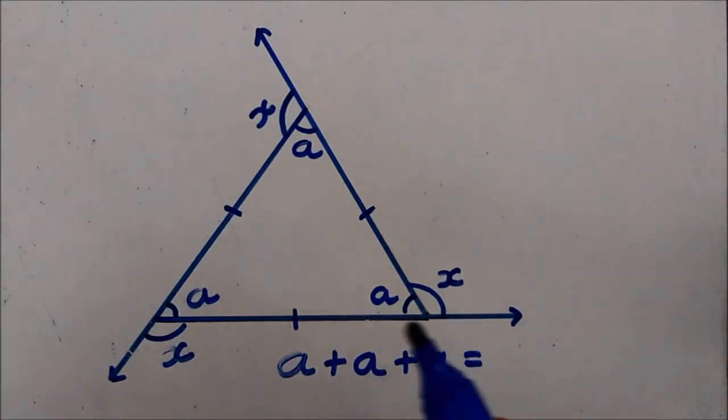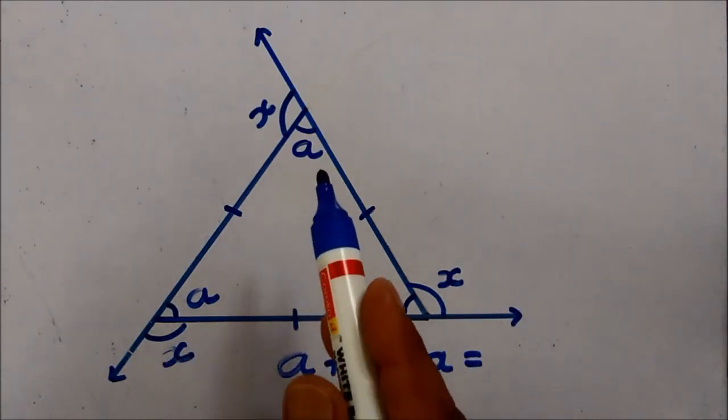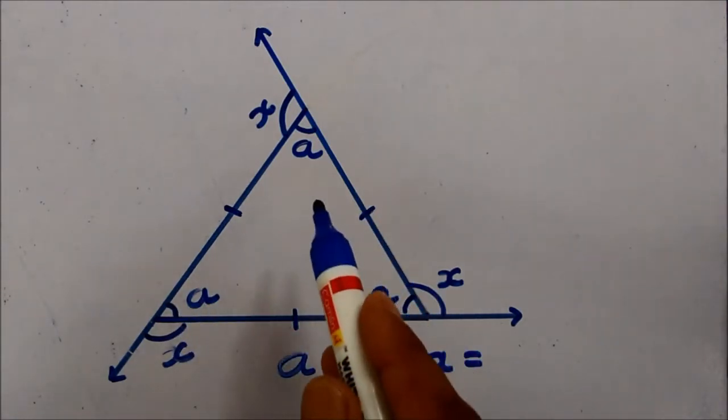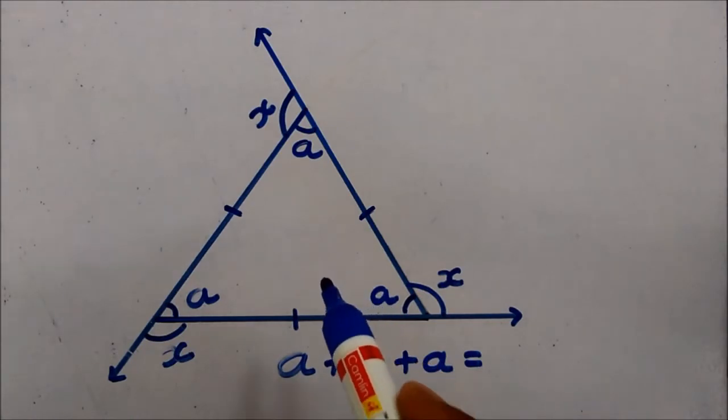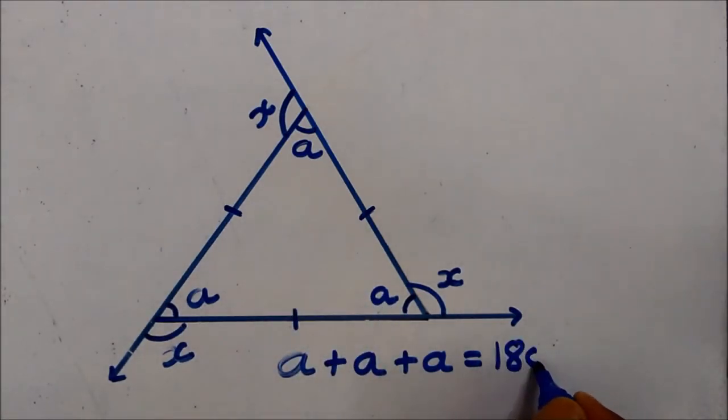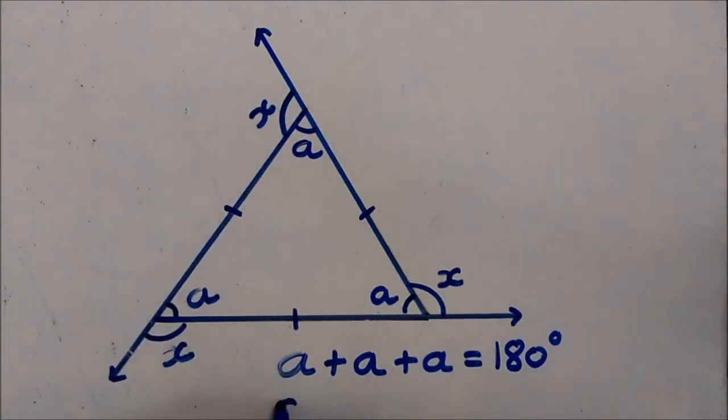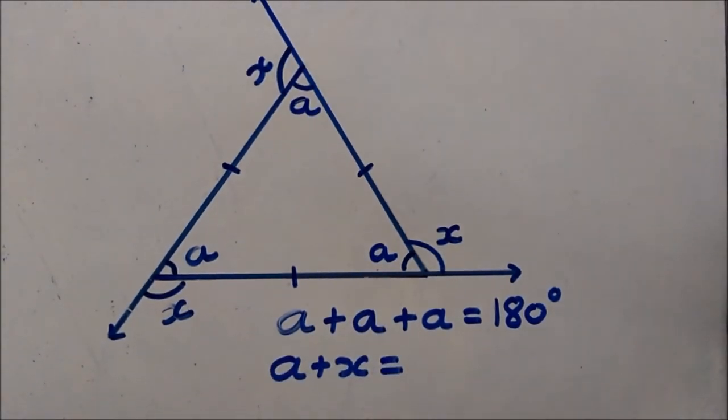Now we already know that the measure of all the angles, the sum total is 180 degree. What about a plus x? Linear pair, linear pair, linear pair. So this is also 180 degree.